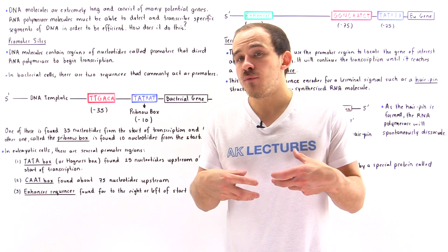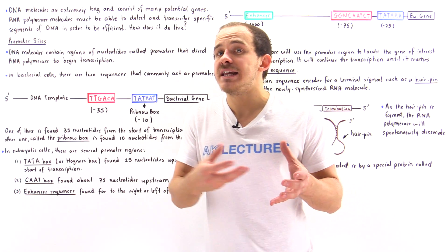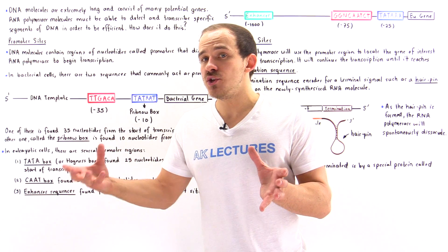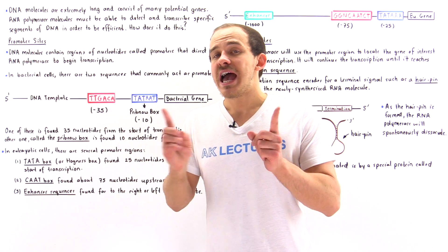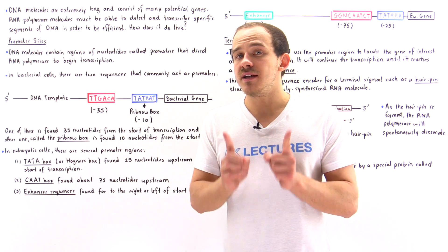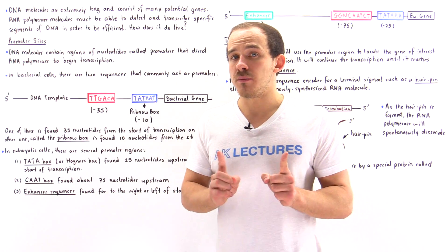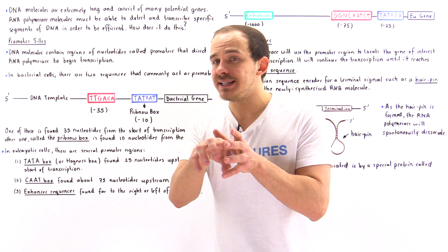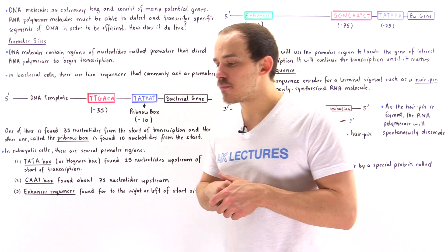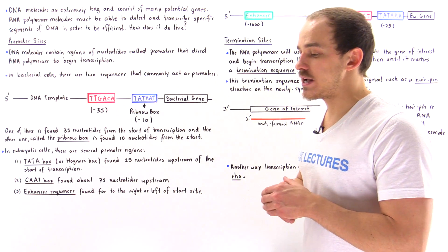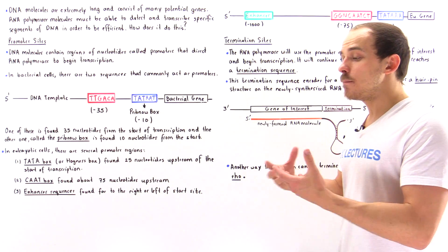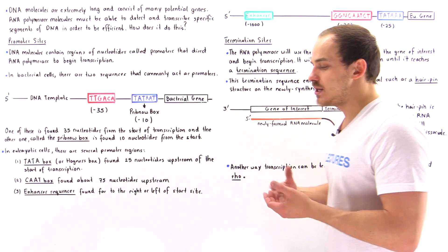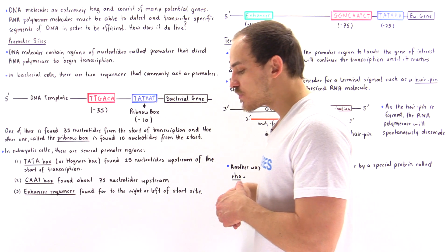If we have many genes and many nucleotides, how exactly does the RNA polymerase know where to bind and begin the process of transcription of some particular gene of interest?